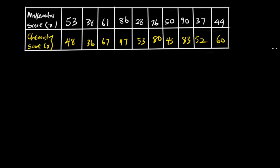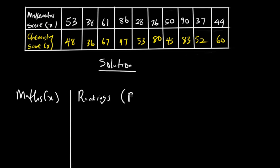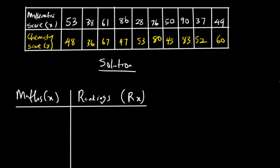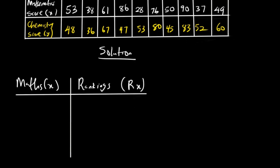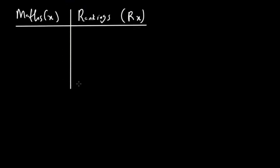I'm going to be picking mathematics followed by chemistry. If we are picking mathematics first, we're going to have a table drawn for mathematics with x and mathematics rankings. What you need to do is draw out all the scores in mathematics in descending order of magnitude, meaning starting from the highest to the smallest. If I go back to my mathematics scores,